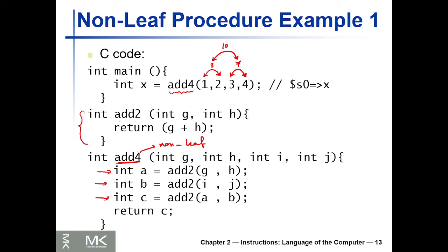add2 is a leaf function because it makes no calls to other functions. In add4, we add g and h (the first two arguments, one and two) to get a=3, then add i and j (three and four) to get b=7, then add a and b to get c=10, and return c. The final value x should be stored in register s0.